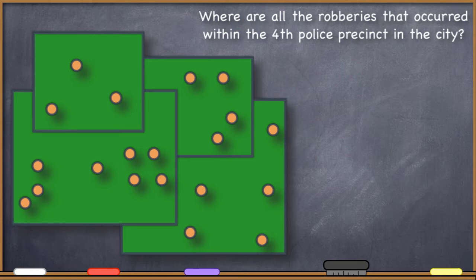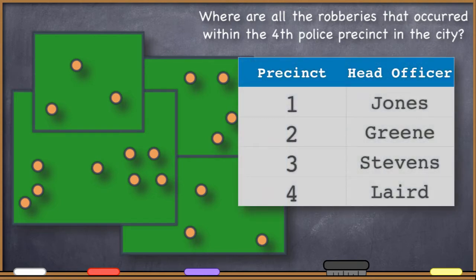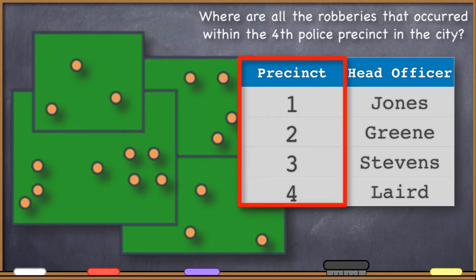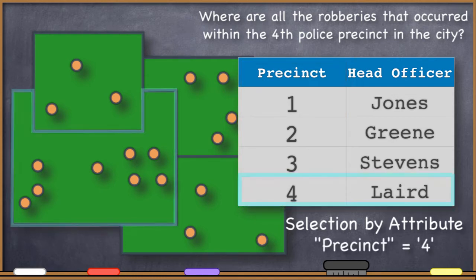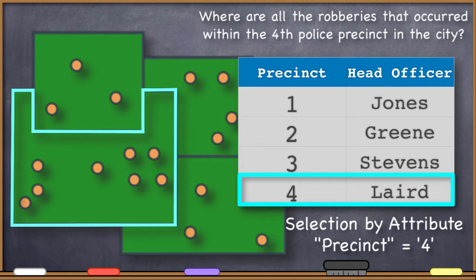Let's start with that one first. In the attribute table of the precinct shapefile is a field that tells you which precinct it is. And of course you're looking for the fourth. So I hope that you're already thinking about selection by attribute. You could construct an SQL query that would ask which one of these is the fourth precinct, and then it will return that selection of one of those polygons to you that indicates the fourth precinct.